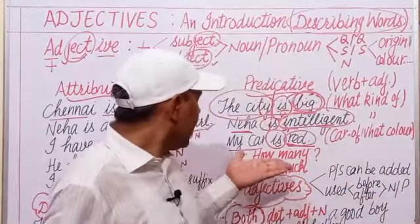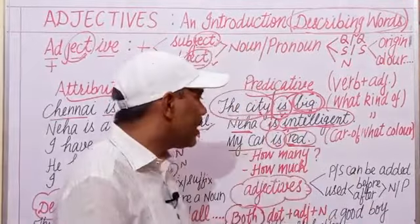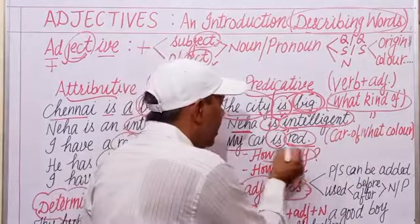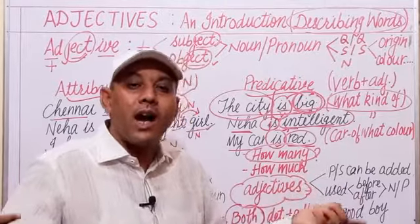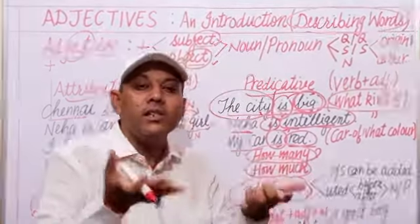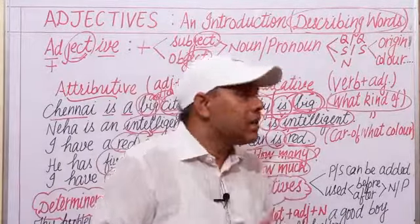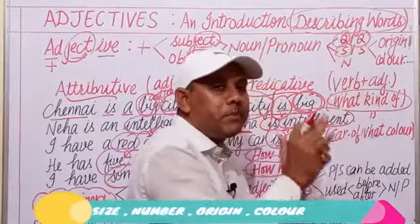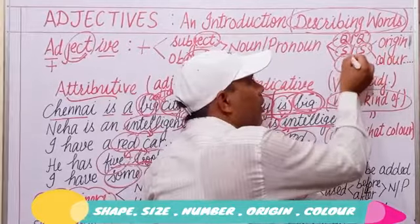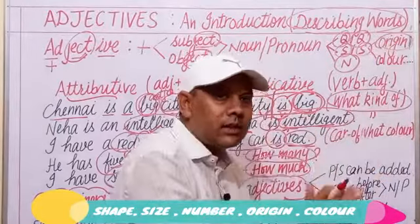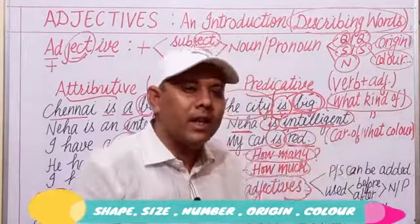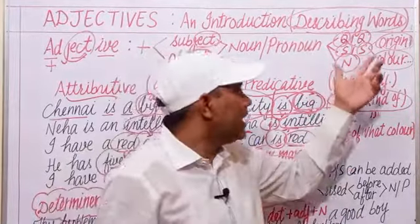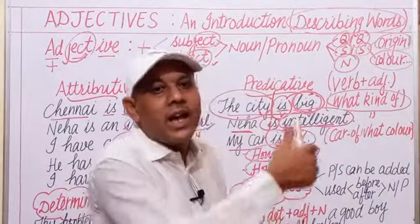Adjectives tell us about what kind of person or thing, how many persons or things there are, and how much the quantity is. They tell us quality, shape, size, number, origin, and color of nouns and pronouns. We can find an adjective in a sentence by asking: how many, how much, what kind of, what color, what shape, what size, or what is the origin of a particular thing.